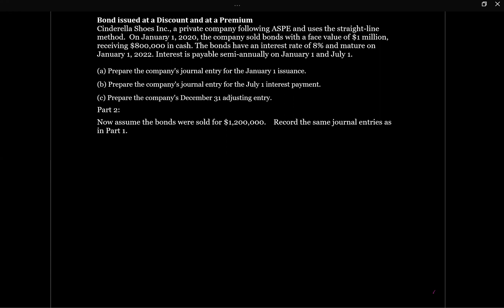They're following ASPE and using the straight-line method — they could elect to use the effective interest method under ASPE, but it specifically says straight-line. The company sold bonds with a face value of $1 million but only received $800,000 in cash, so we know the bonds were sold at a discount. At maturity in January 2022 they must pay back $1 million, but at issuance they only got $800,000, so we have a discount to amortize using the straight-line method.